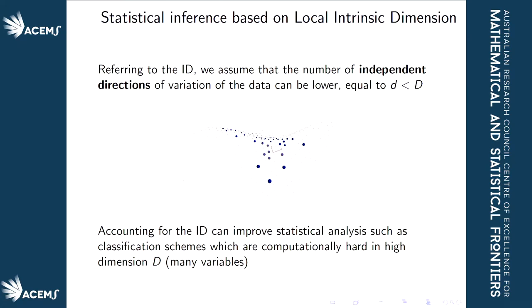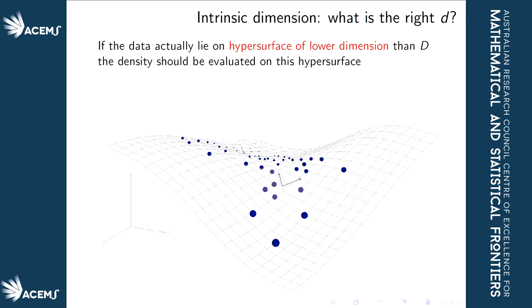If we look at the data in this two-dimensional manifold, we can improve our statistical analysis. For example, if we are classifying the data, we know that working in high dimension is hard, but if we identify that the data really lives on a smaller dimensional manifold, our statistical inference will be much easier because we reduce the dimensionality of the problem.